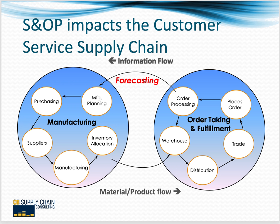S&OP impacts the customer service supply chain. This is a model I've used — not that different from other people's models for how a fulfillment chain works. There are two different aspects: we take orders, and we manufacture or have goods manufactured for us. My background is CPG — Consumer Packaged Goods Companies. The trade — think Walmart, Target, Carrefour — places an order. The order is processed to make sure all items ordered are valid and that the customer is authorized to order them.